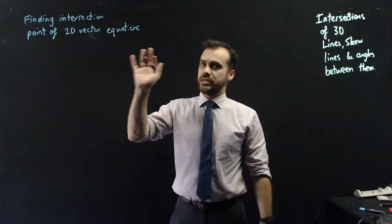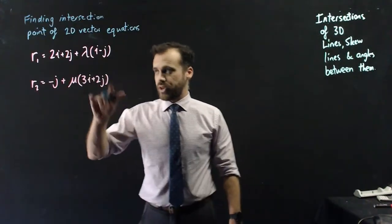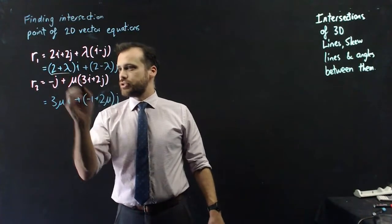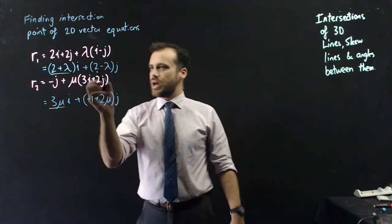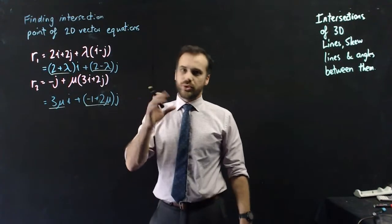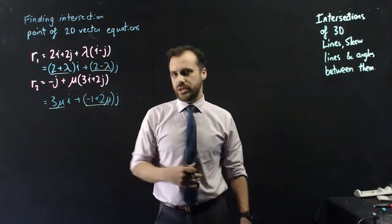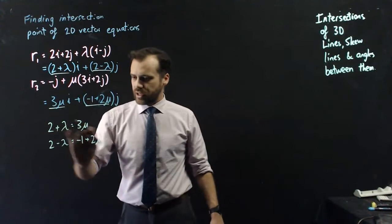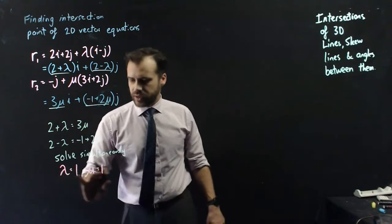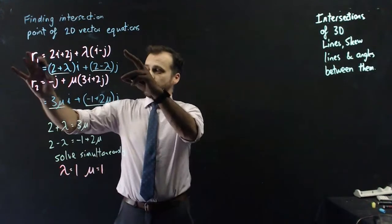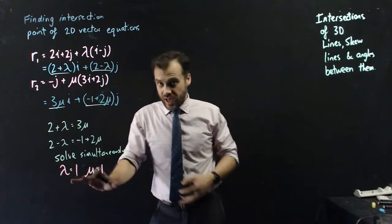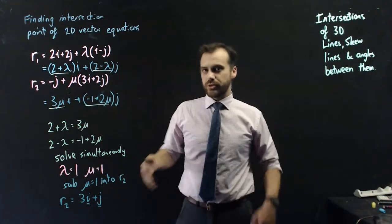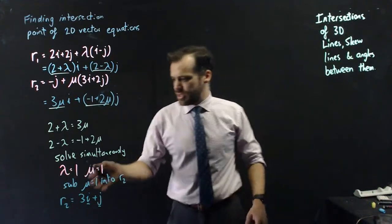Finding the intersection point of two 2D vector equations — get them in terms of i and j components. These two vector equations meet where 2 + λ = 3μ and 2 − λ = −1 + 2μ, that is, when the i components equal each other and the j components equal each other. Solving simultaneously gives λ = 1 and μ = 1. Substituting into R2 gives the intersection at position vector 3i + j.